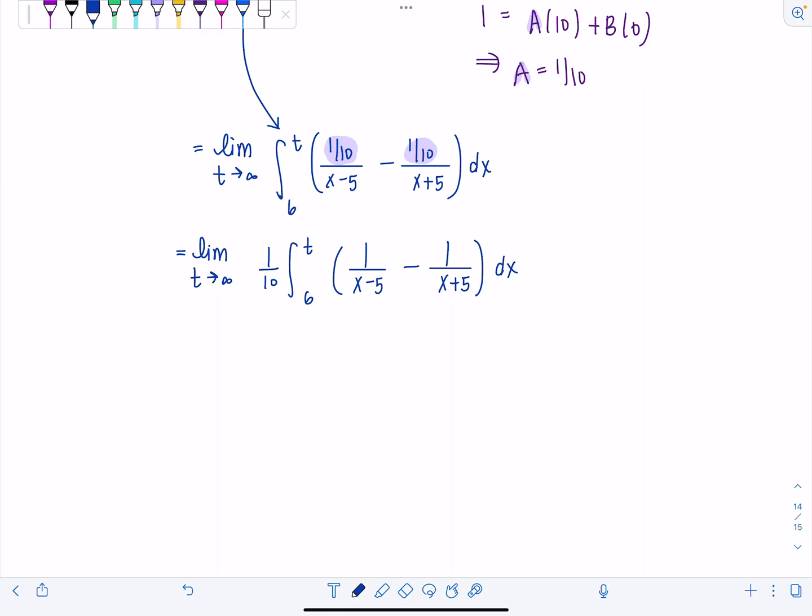From here on out, integrating should be easy. You shouldn't even need to do a u substitution. If you let u equal x minus 5, du is dx, right? So really no point. We're just going to have natural log of absolute value of each of those denominators. So now we've got limit t approaches infinity of 1 tenth times ln absolute value x minus 5, minus ln absolute value x plus 5, and then all of this is evaluated from 6 to t.